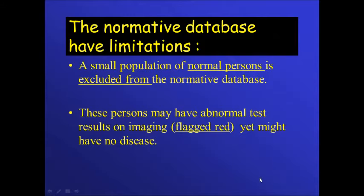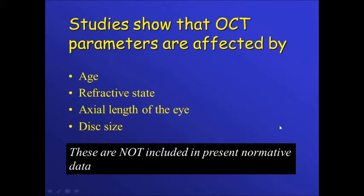The normative database used for comparison does not account for patient age, refractive error, axial length, or disc size when it was originally established — and all these parameters can affect the normative data.